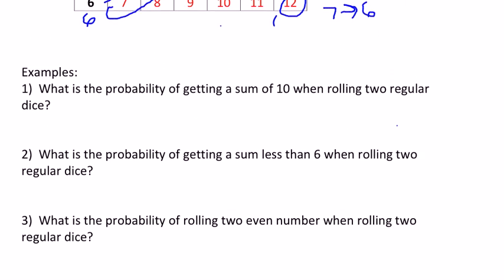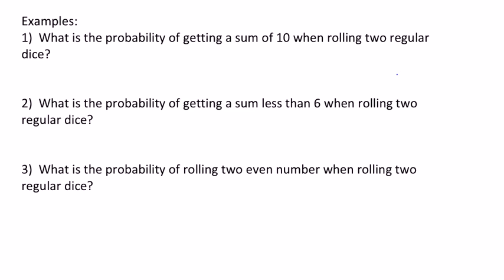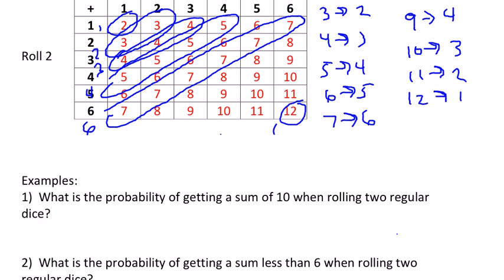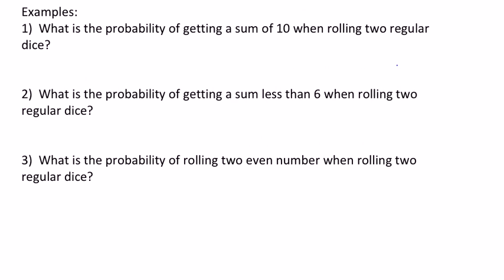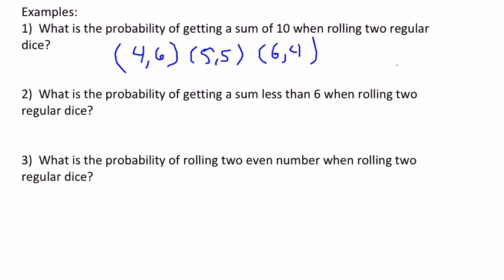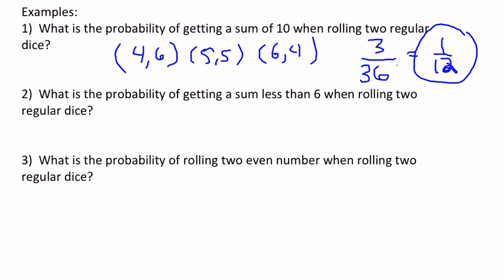First example: what is the probability of getting a sum of 10 when rolling two regular dice? From the chart, there are exactly three ways to get a sum of 10. If you list them out, they are four-six, five-five, and six-four. Order matters here. So the probability is three over 36, which simplifies to one-twelfth.